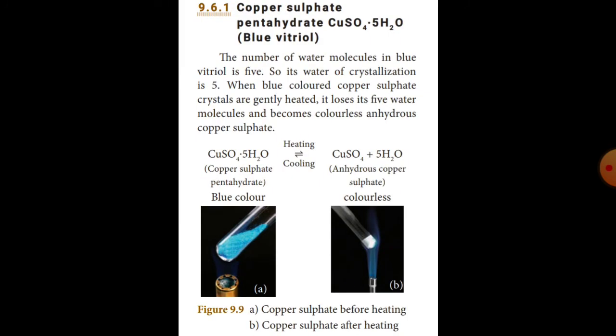The number of water molecules in blue copper sulfate (CuSO₄·5H₂O) is 5 — that is its water of crystallization. When blue colored copper sulfate crystals are gently heated, they lose their 5 water molecules and become colorless anhydrous copper sulfate.